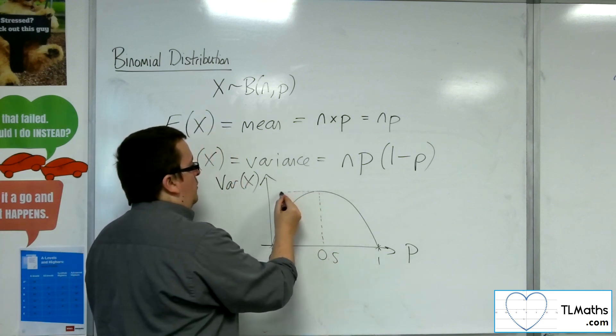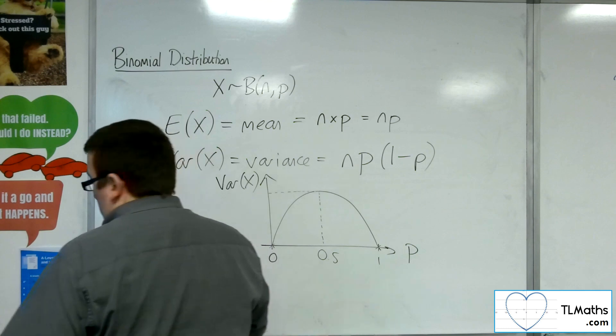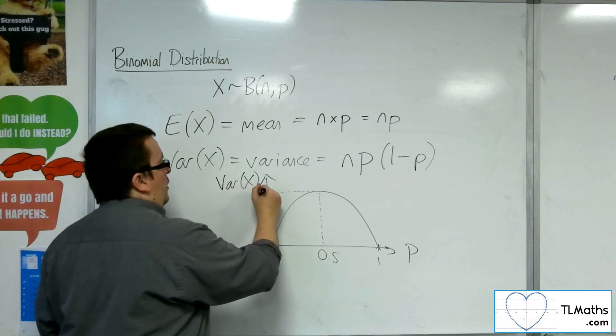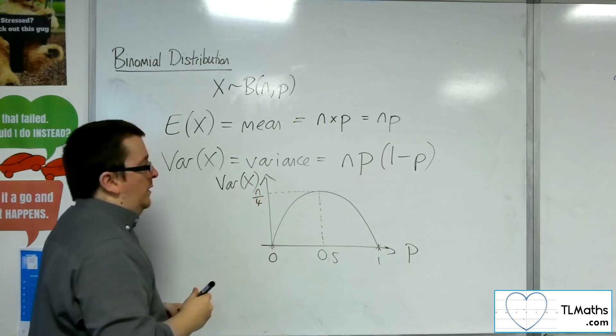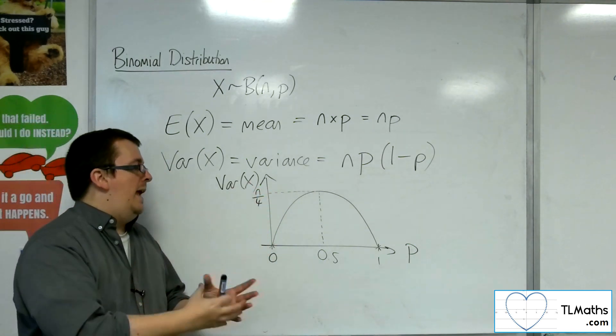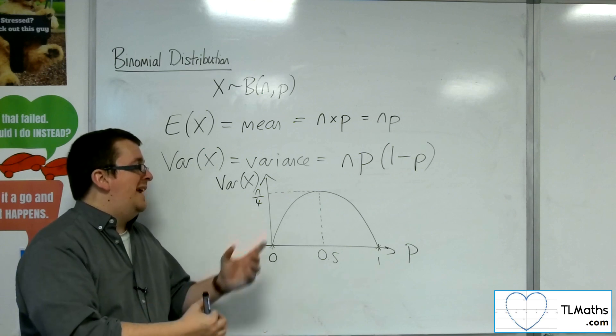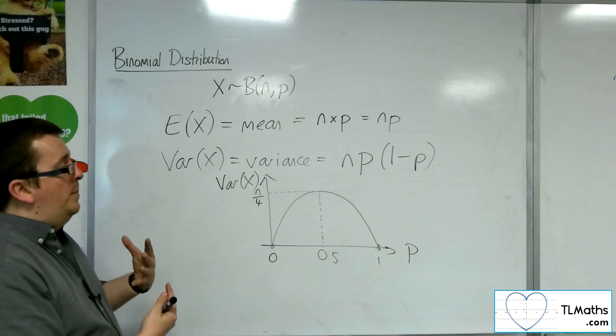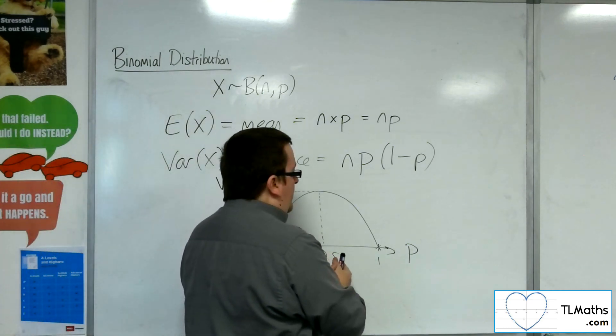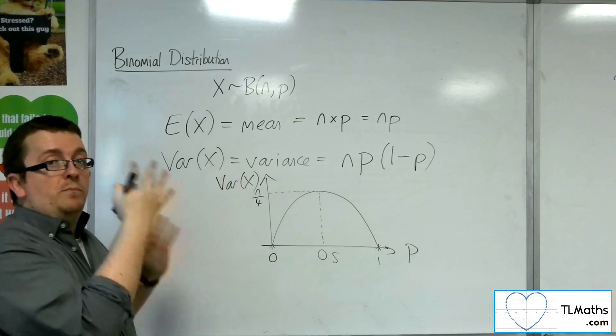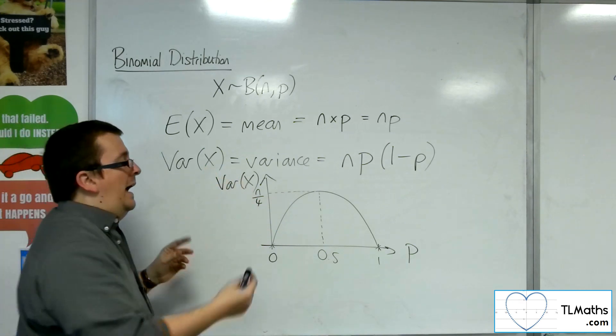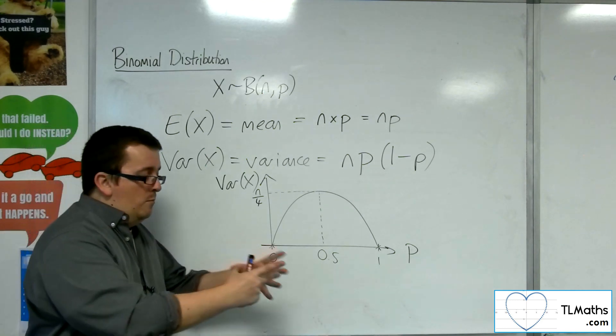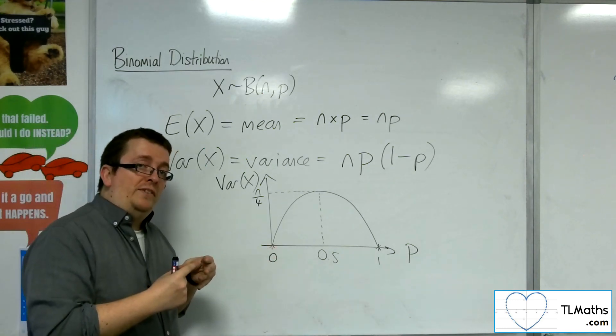So when p is 0.5, we get 0.5, one half, times one half, so a quarter. That would be n over 4. So the variance when p is 0.5 is actually the number of trials divided by 4. That's the largest it will be. So when the probability is 0.5, the distribution will be at its most possible spread out. And the closer the probability gets to 1 or 0, the more squashed together the probabilities will be.